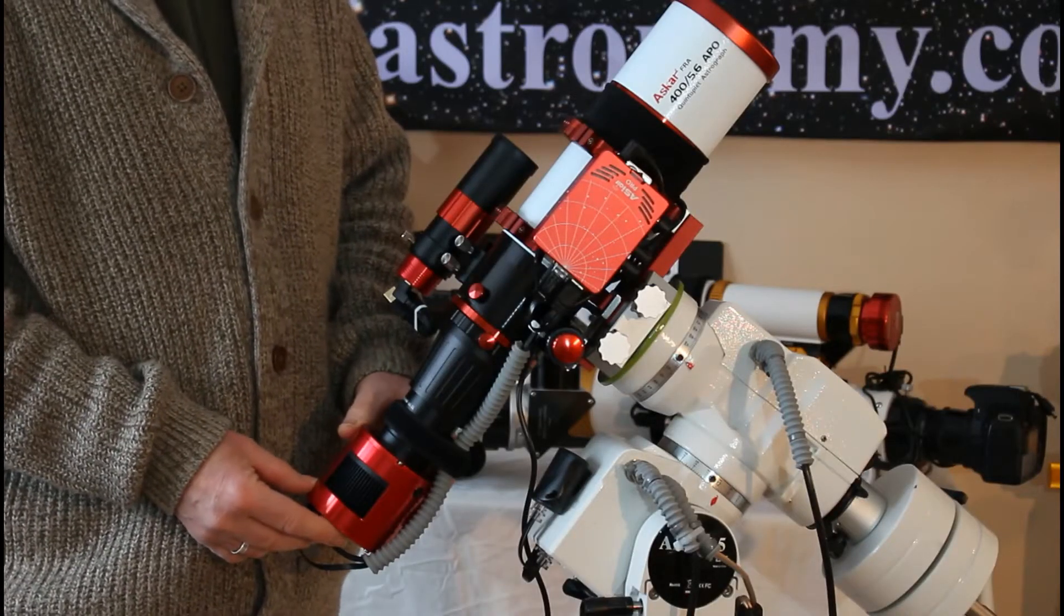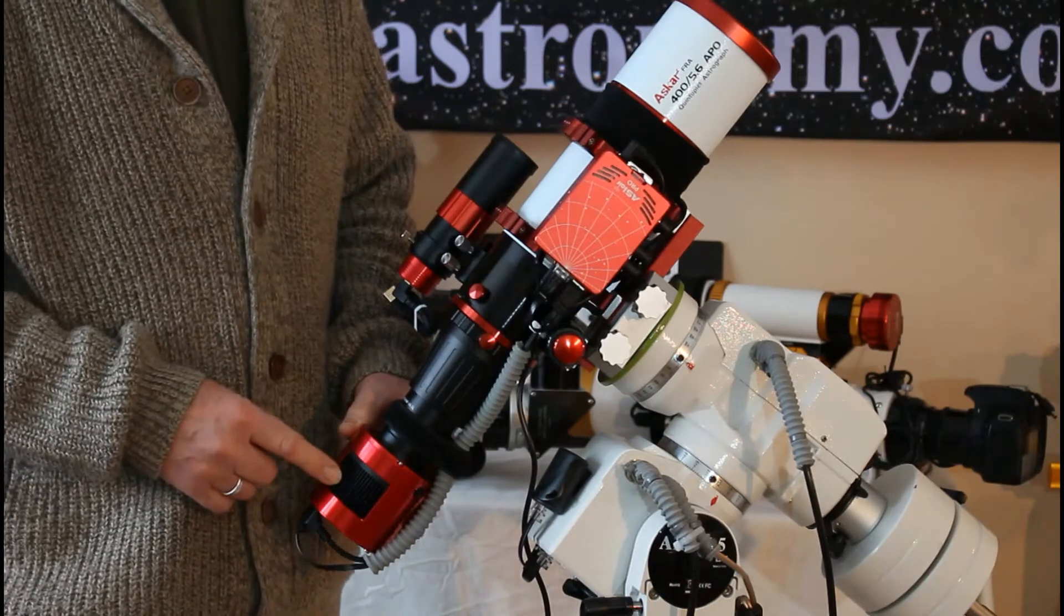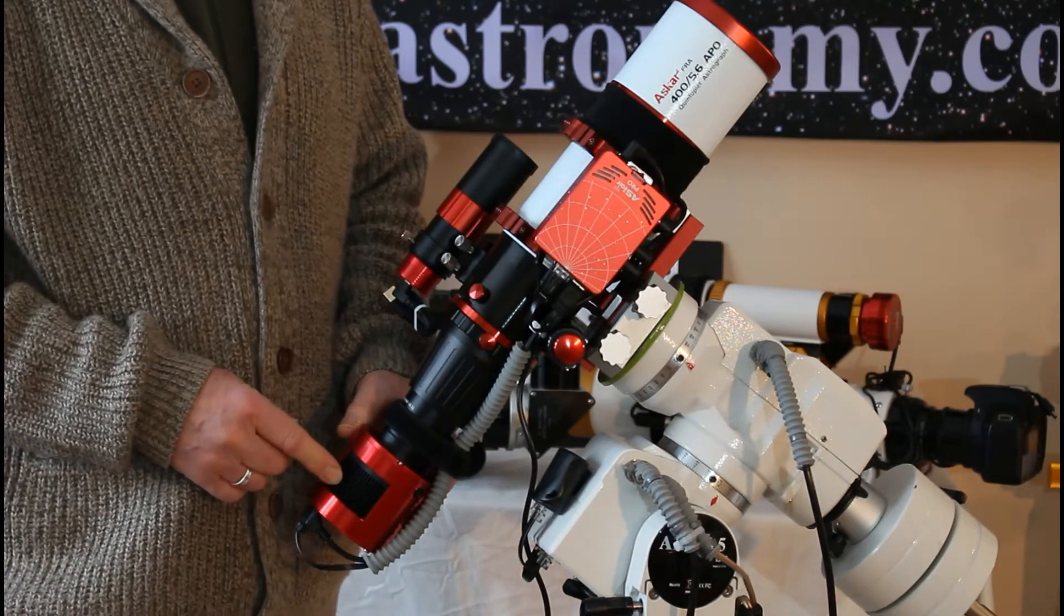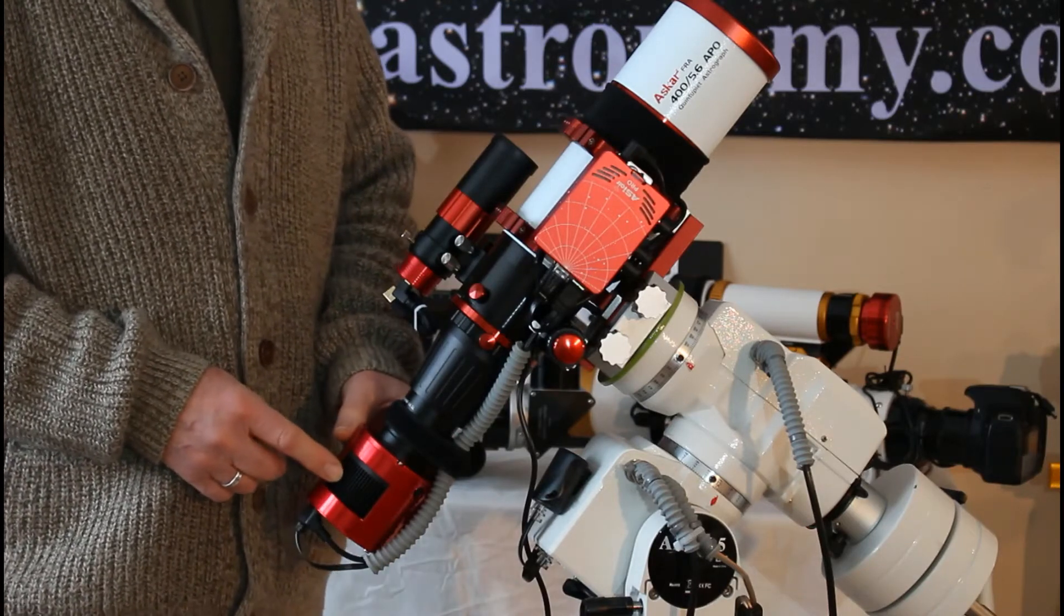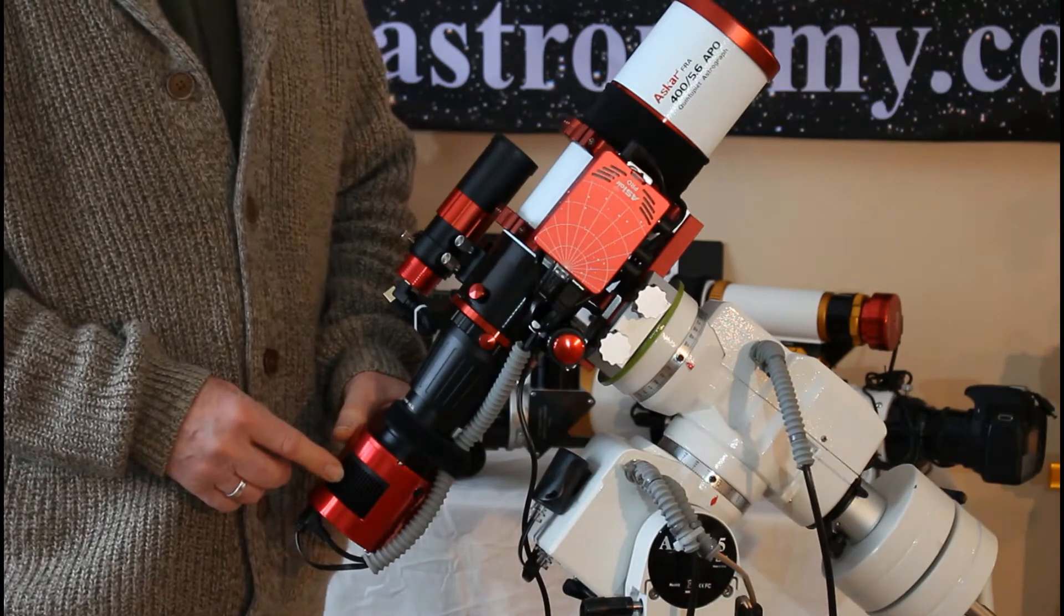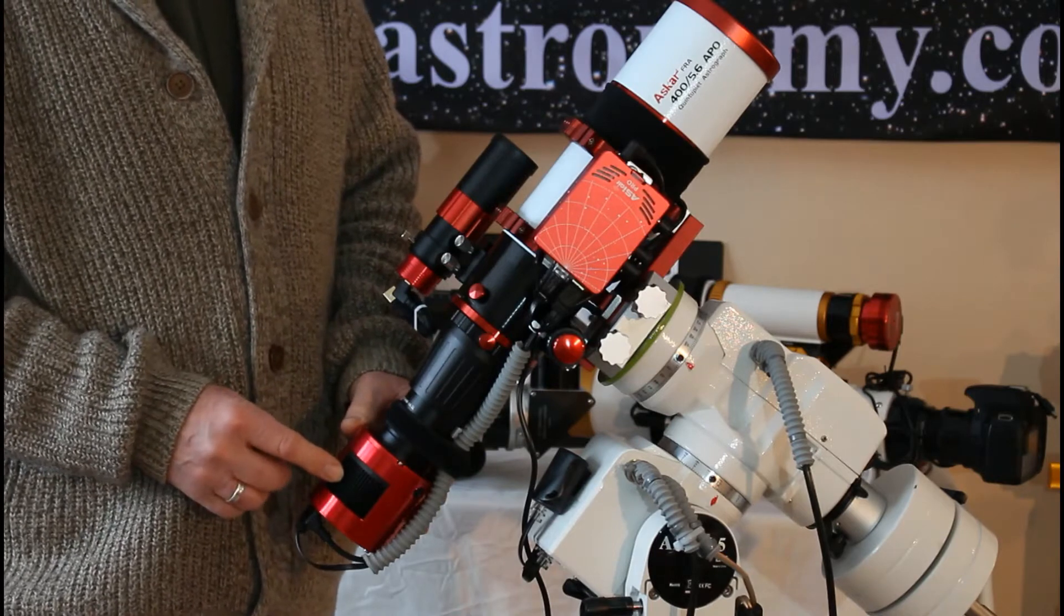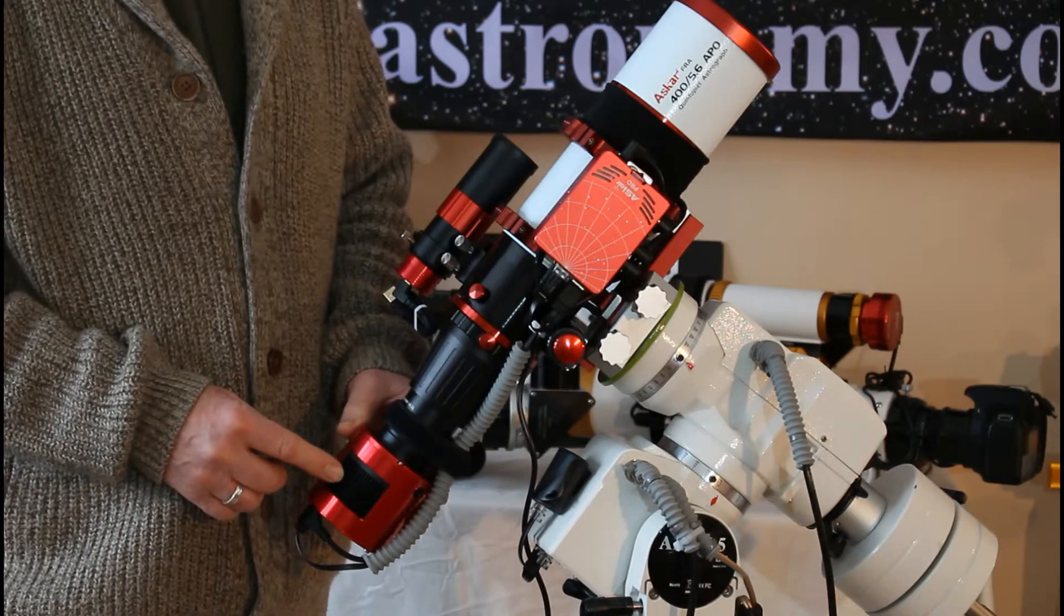The camera is a ZWO ASI 533MC Pro. It's a cooled camera, is extremely sensitive and has a one inch sensor. The one inch sensor is a little bit misleading because actually it's about 16 millimeters on the diagonal, but still plenty big enough to give you some really good wide field shots.